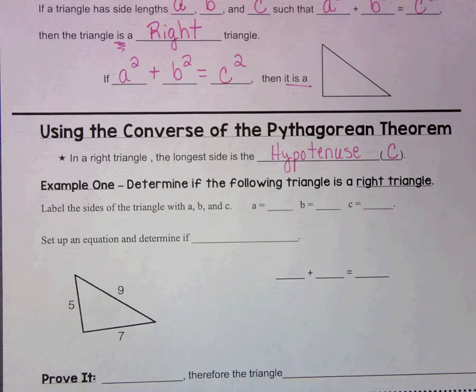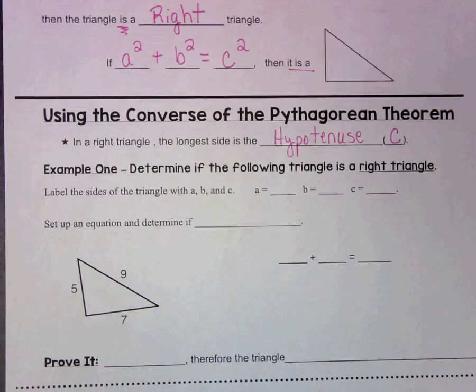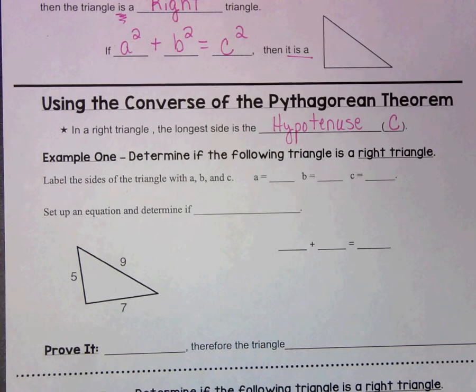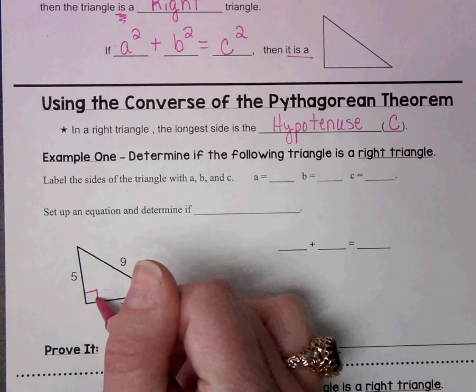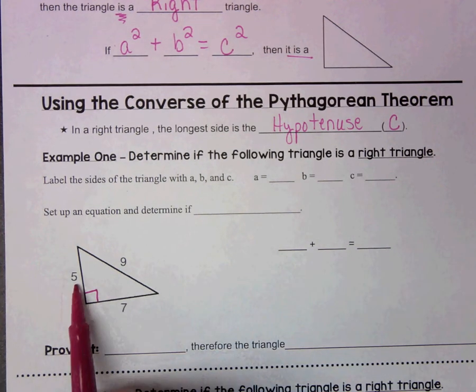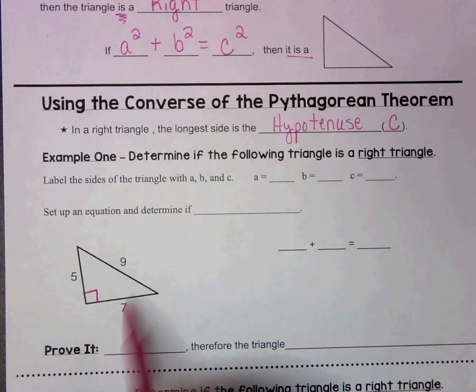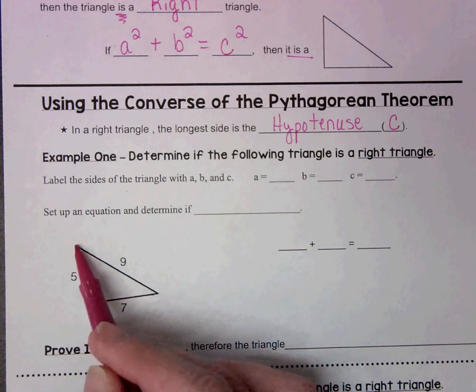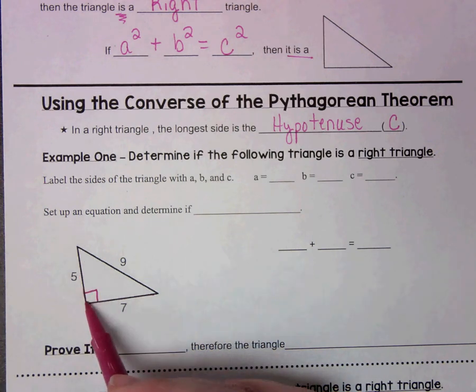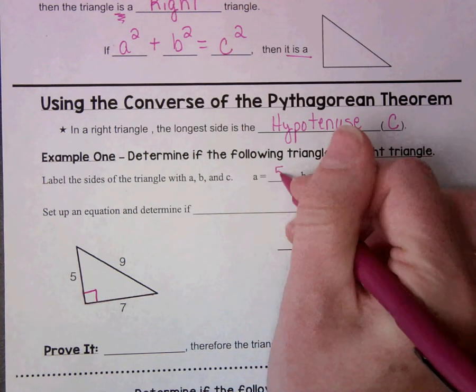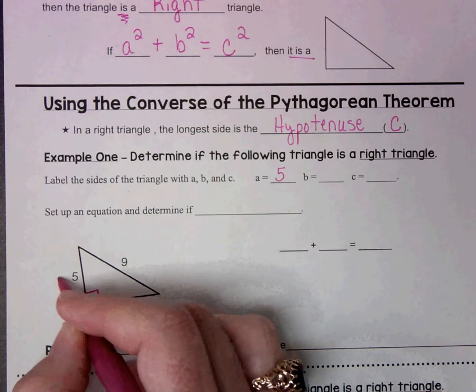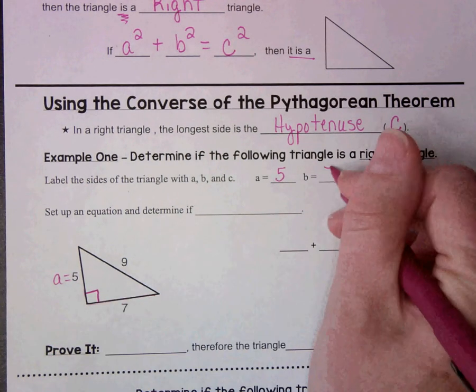So it says label the sides of the triangle with A, B, and C. So I would start out by finding my right angle. Here is your right angle. Hopefully you recognize that. So that means side 5 and side 7, since they make up the right angle, those are the legs. So we could say that A is 5 and B is 7.